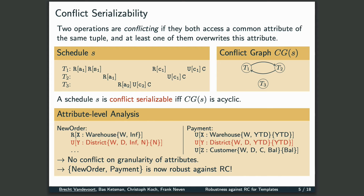The reason we analyze conflicts on the level of attributes is that this allows a more fine-grained robustness analysis. Consider, for example, two templates based on the TPCC benchmark, and look in particular at the two highlighted update operations accessing the district relation. The operation on the left-hand side updates an attribute that is not observed by the operation on the right-hand side, and the other way around. Therefore, these two operations will never lead to conflicts on the level of attributes, and it turns out that these two templates are robust against Read Committed.